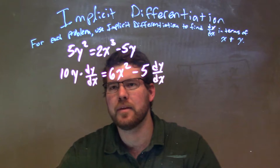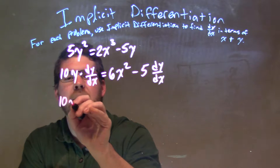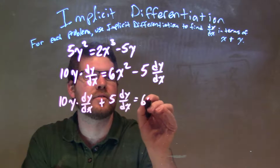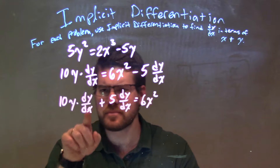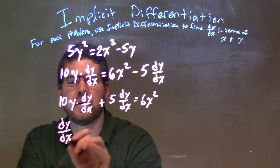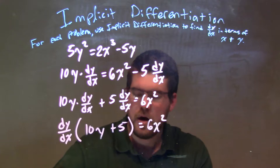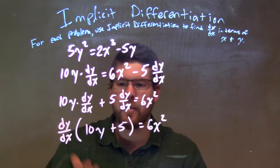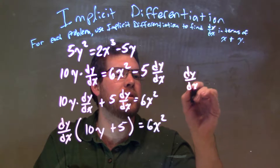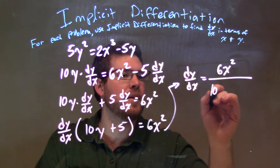Now my goal is to get dy/dx by itself. I'm going to add 5 dy/dx to both sides. So I have 10y dy/dx plus 5 dy/dx, and that equals 6x squared. Now I have dy/dx in both terms on the left, so I'll pull out a dy/dx, leaving dy/dx times (10y plus 5) equal to 6x squared. I then divide both sides by (10y plus 5), giving dy/dx equals 6x squared over 10y plus 5.